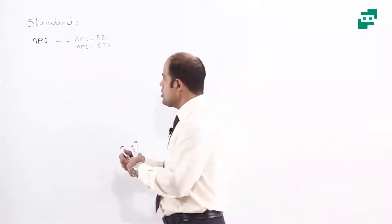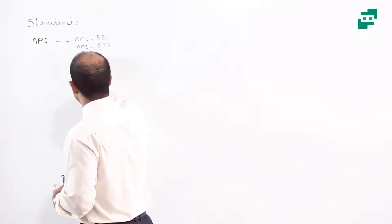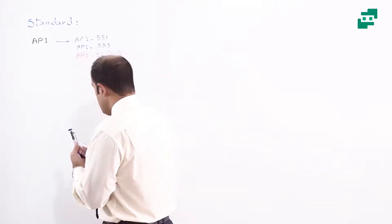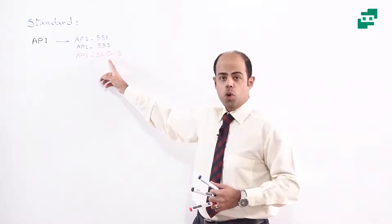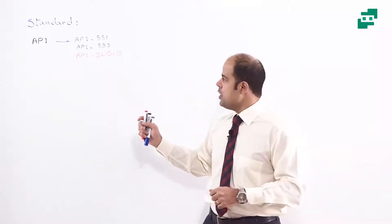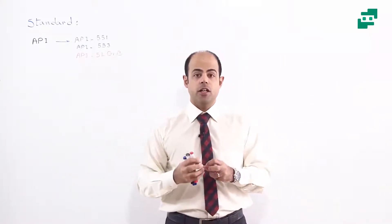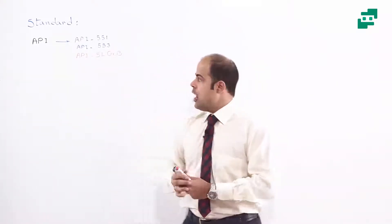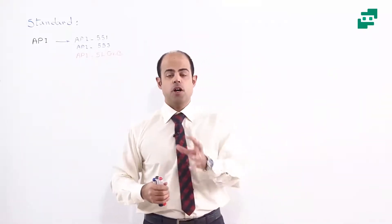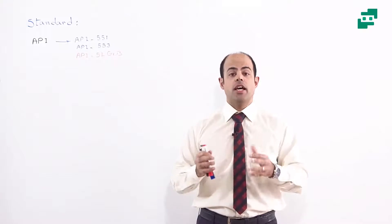Let me write something here for you: API 5L Grade B. This part of the standard is totally different from what we've already written on the whiteboard. This part is just related to designing and choosing the material for the pipes. API 5L Grade B is talking about carbon steel pipe that you must consider if you want to design or choose a material for the pipes at the site.